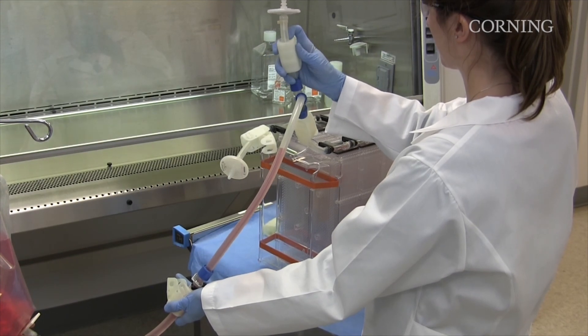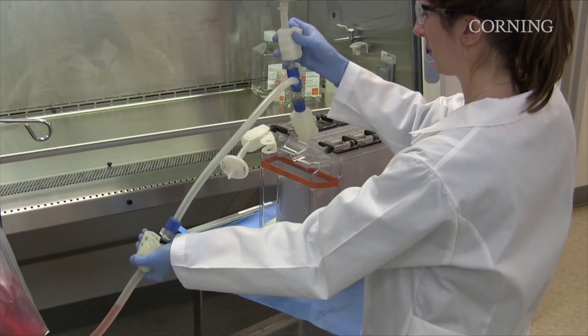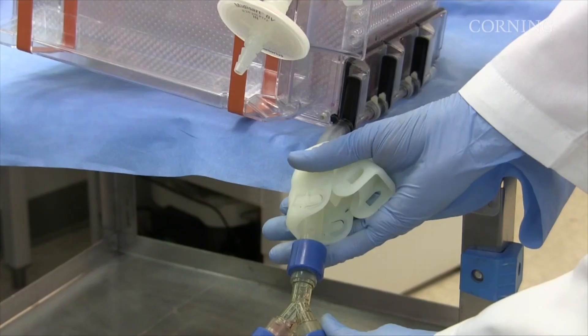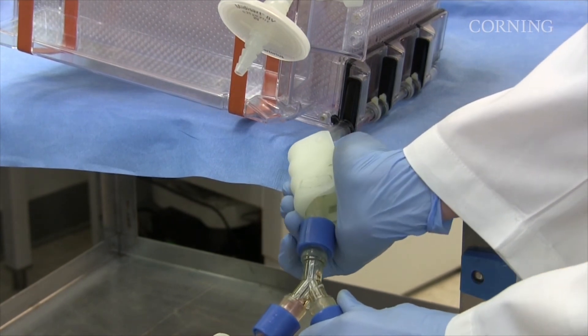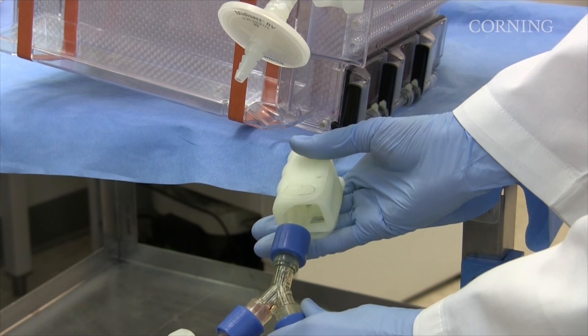After the HyperStack vessel and liquid handling tubing are empty, the vessel can be turned to equilibration position and the tubing lifted to chase the media. Close both the clamp on the liquid handling tube line and the clamp on the collection vessel tubing. The procedure is now complete.